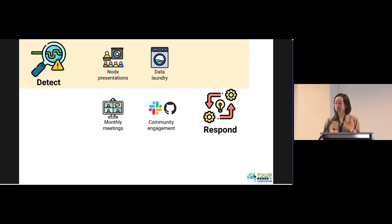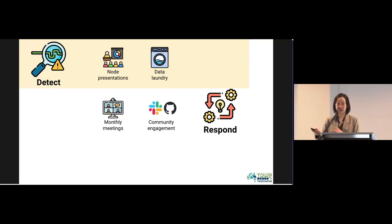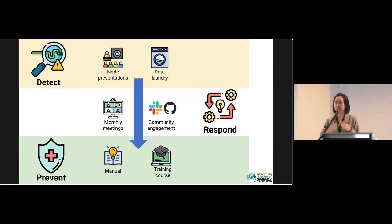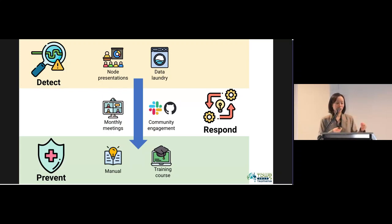To respond to all the challenges, we have monthly meetings where people can propose agenda items to discuss their questions. We also have a community engagement channel — a Slack channel and a GitHub repository — where we respond to different issues. Importantly, what we discuss in the node presentations and data laundry events doesn't get lost: we document it in the OBIS manual and in training course materials, to educate data managers on how to handle and clean data before it gets published.